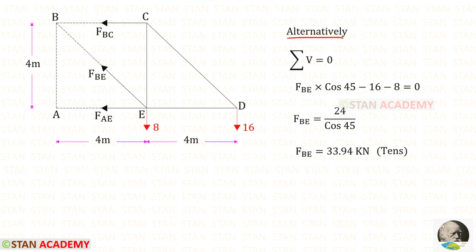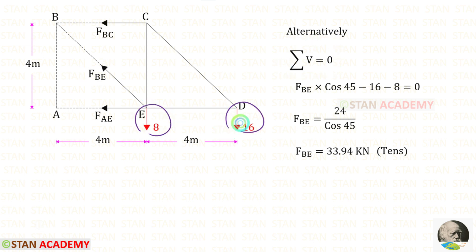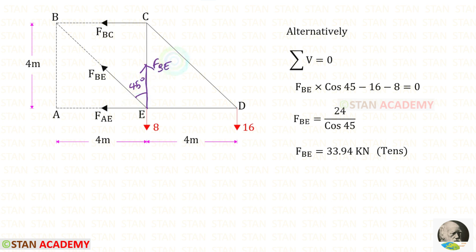Alternatively, we can find FBE using sigma V equals 0. The two downward forces are negative. We have to make FBE vertical using 45 degrees. Since FBE is acting upwards, it will be positive and we have to multiply with cos 45. In this way, for FBE, we will get 33.94 kilo Newtons, which is tensile.